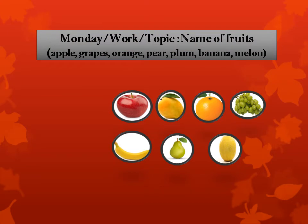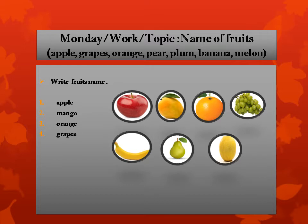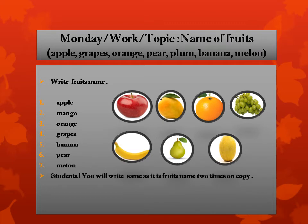So dear students, I am going to talk about the Monday work topic: name of fruits — apple, grapes, orange, pear, plum, banana, melon. Monday work: you will open the copy and write the fruit names. First: apple. Second: mango. Third: orange. Fourth: grapes. Fifth: banana. Sixth: pear. And seventh: melon. You will write each fruit name two times on the copy. The day's objective is that students will be able to write the fruit names.